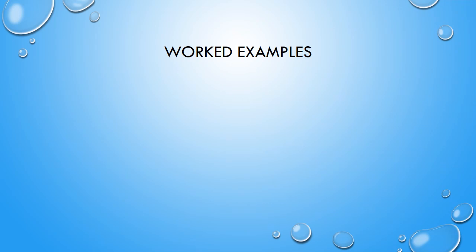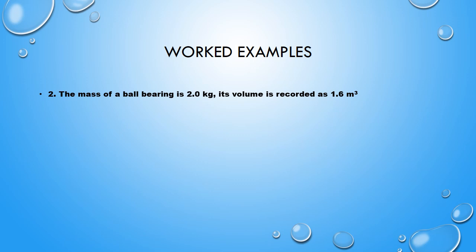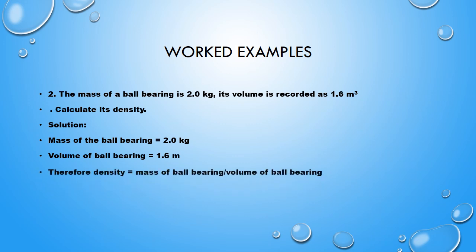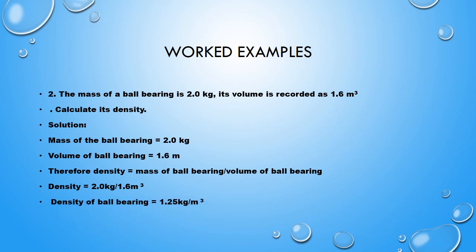Worked example 2: The mass of a ball bearing is 2 kg and its volume is 1.6 cubic meters. Using density = mass ÷ volume: 2.0 kg ÷ 1.6 m³ = 1.25 kg per cubic meter. That is the density of the ball bearing.